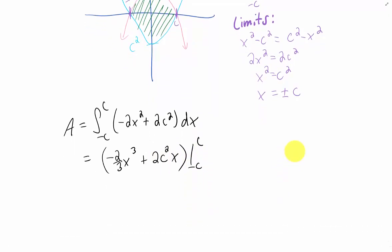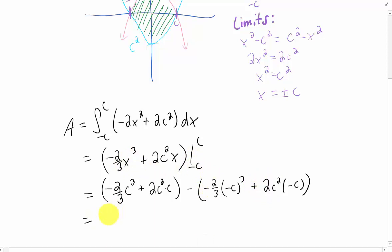And what do we get? Plugging in our upper limit of C for X here gives us this term. Subtracting and plugging in our lower limit of negative C gives us a whole lot of negative signs. And let's see if we can simplify just a little bit.